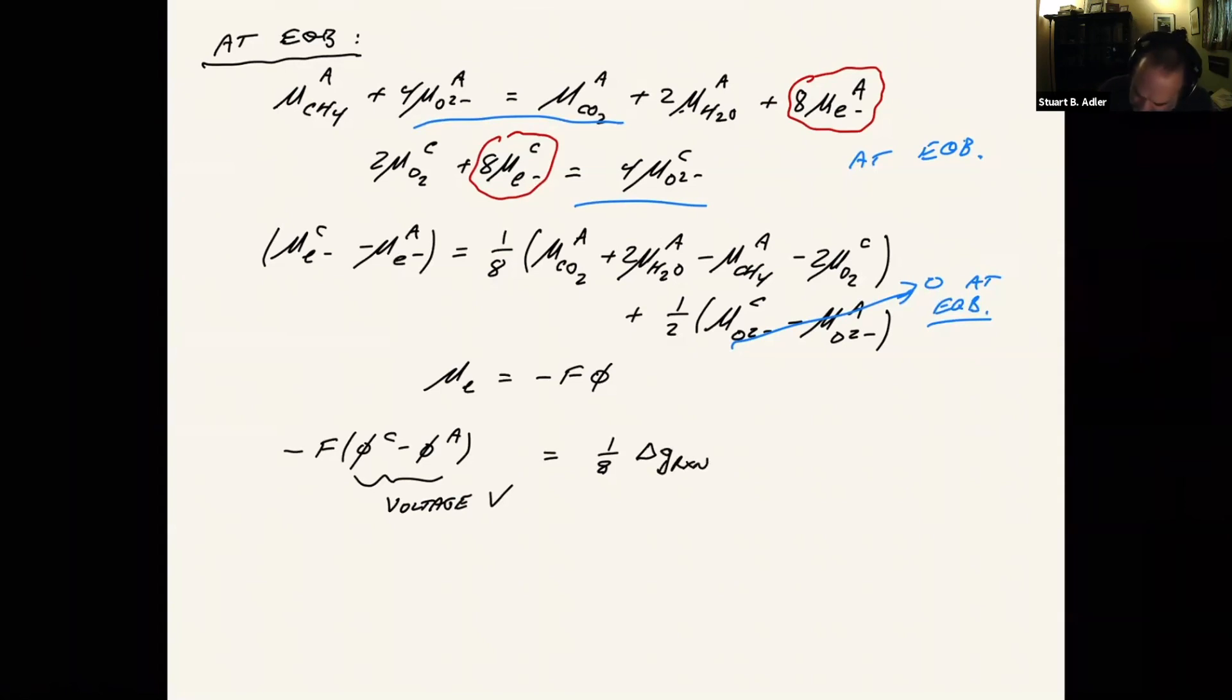And if I rearrange this further, and this is at equilibrium. So our final statement here is that V equilibrium is minus delta G of reaction divided by NF, where N equals the number of electrons. And it's the number of electrons per stoichiometric statement. In other words, we've written this reaction as an eight electron process. So N is equal to eight in this case.